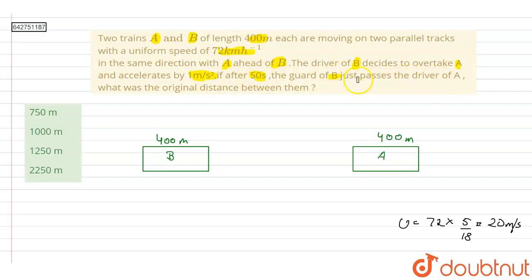Just passes the driver of A, what was the original distance between them? So further what we are given is, let's say this is the original distance between A and B, and this is some x distance.